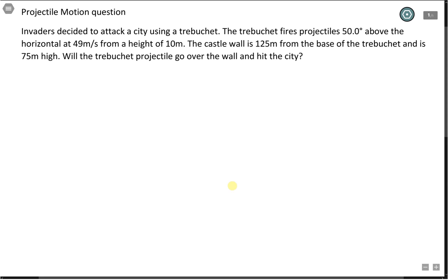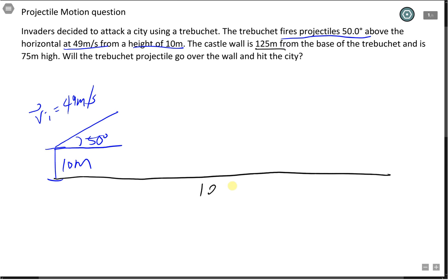Let's start by drawing some pictures. Let's have a trebuchet. It is 10 meters above the ground, with a height of 10. It is going to launch projectiles at 50 degrees above the horizontal, and it's going to fire with an initial velocity of 49 meters per second. The castle wall is 125 meters from the base of my trebuchet.